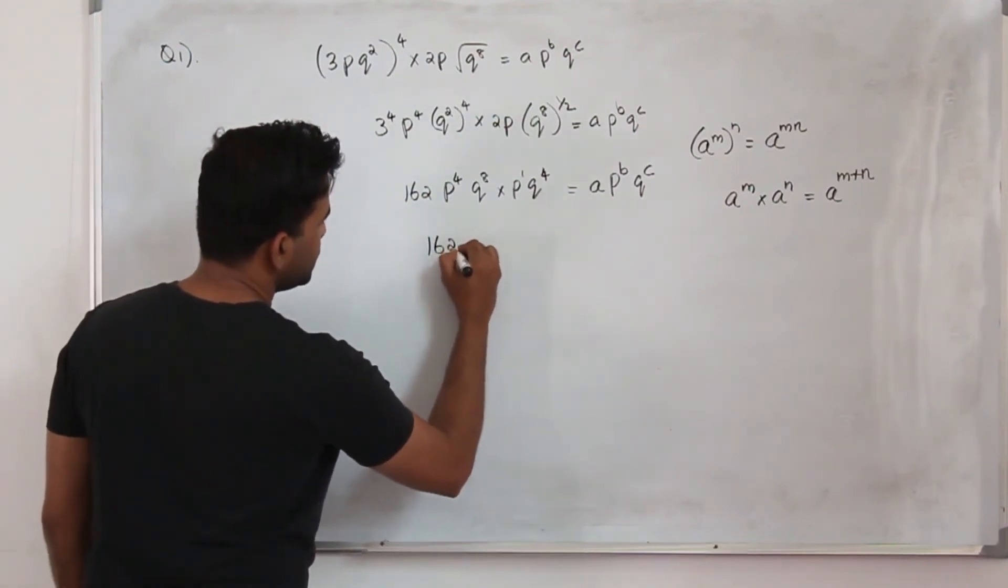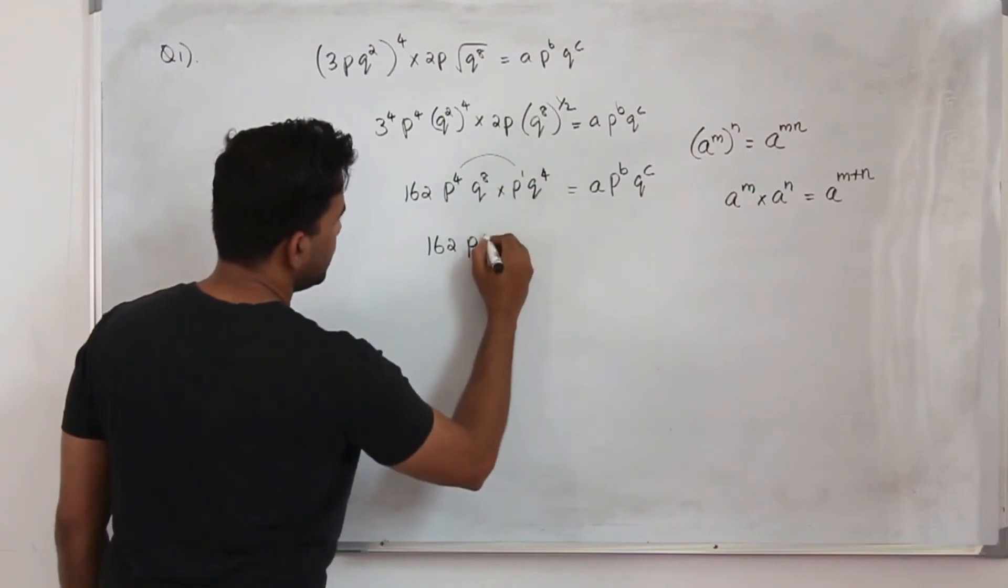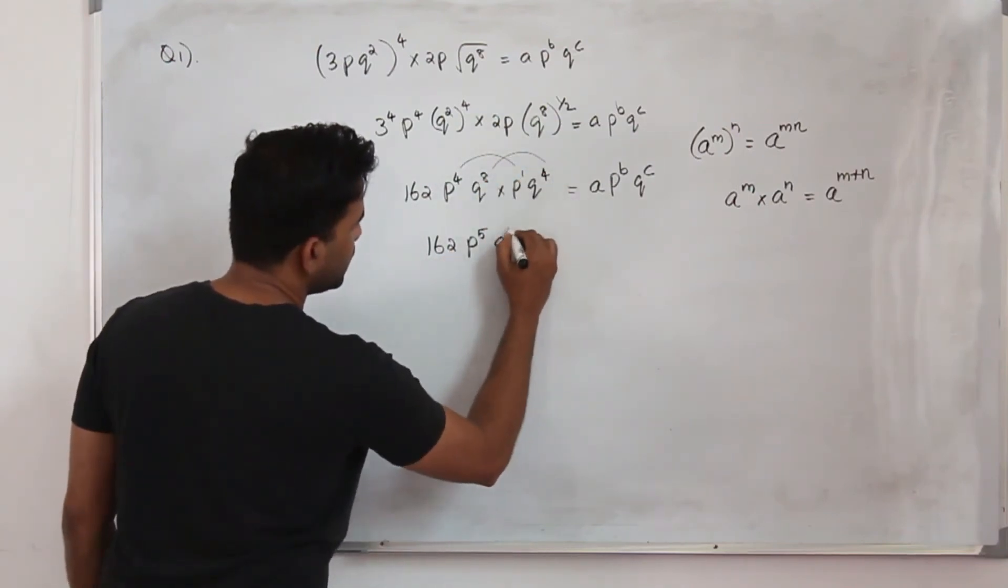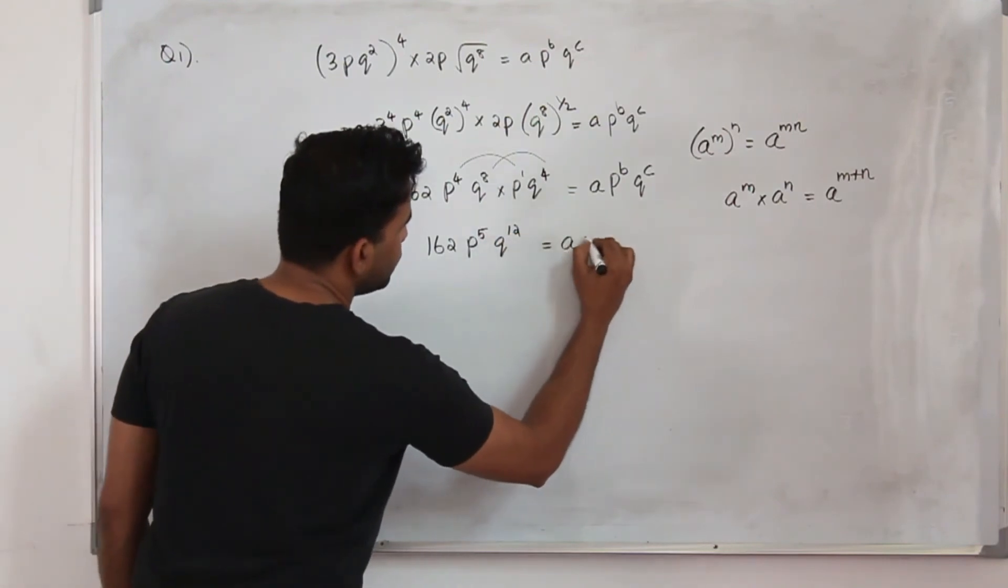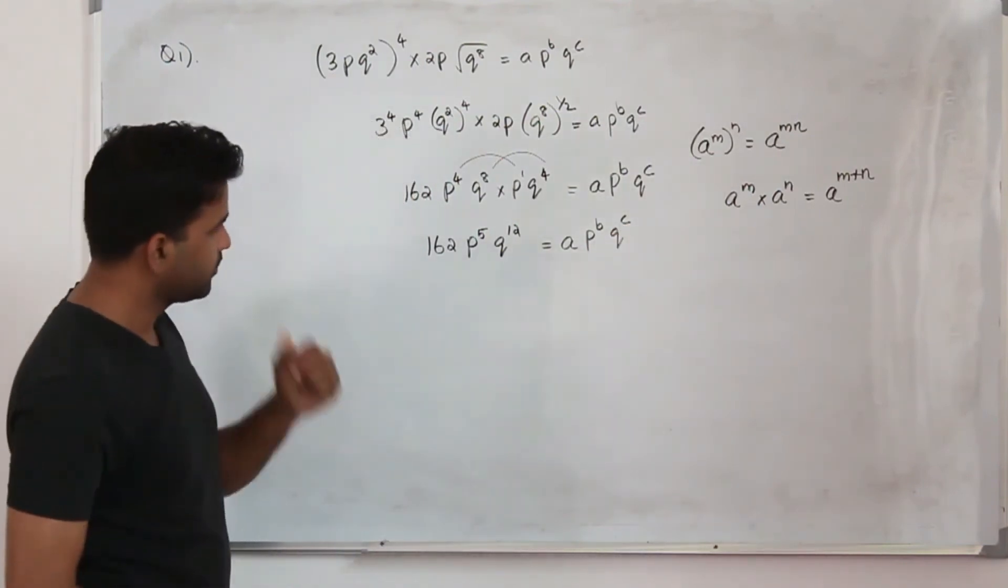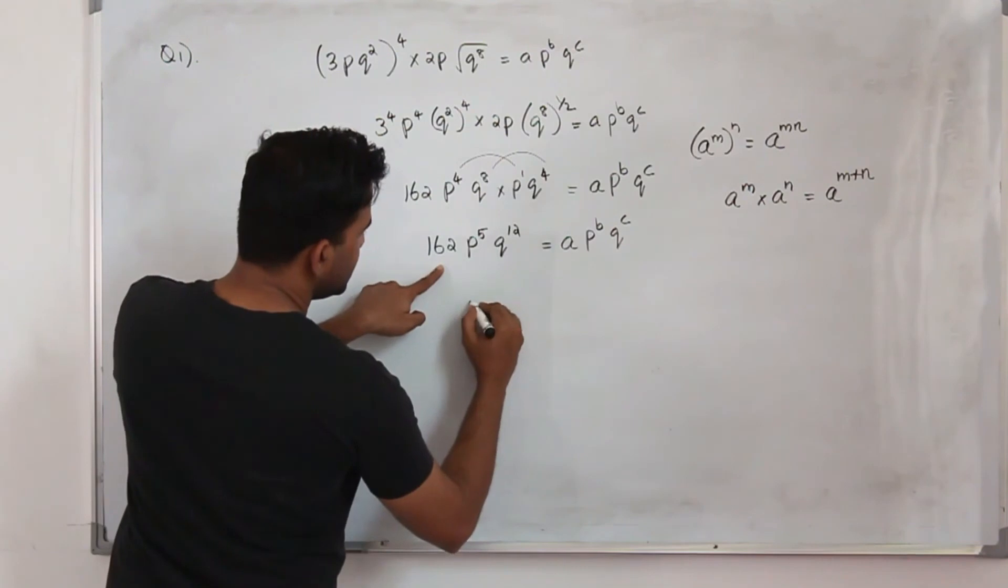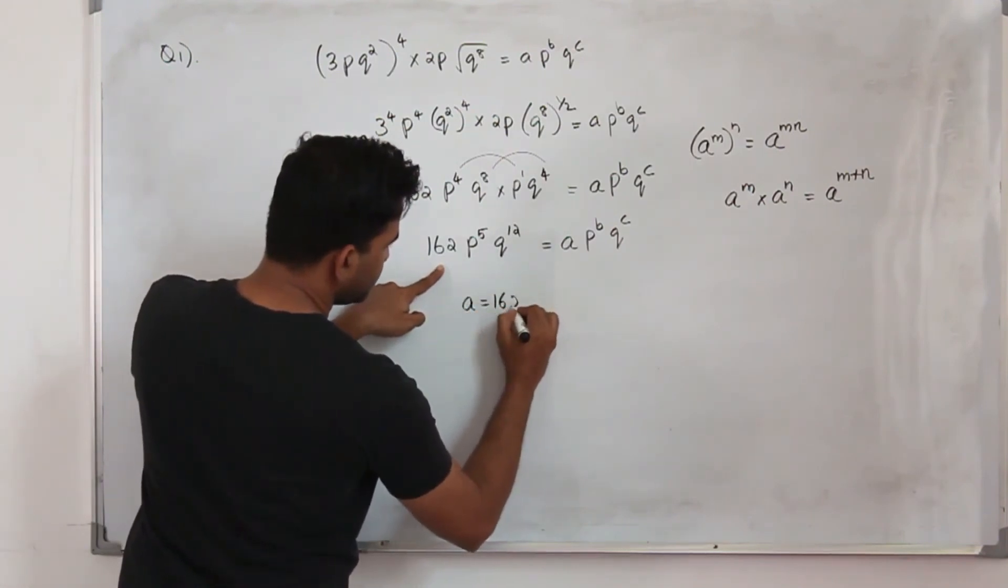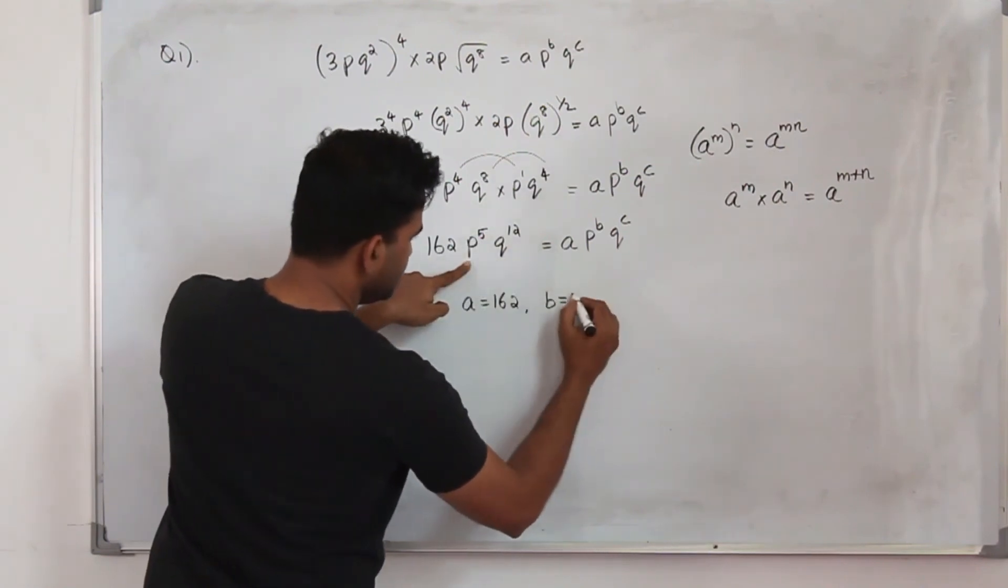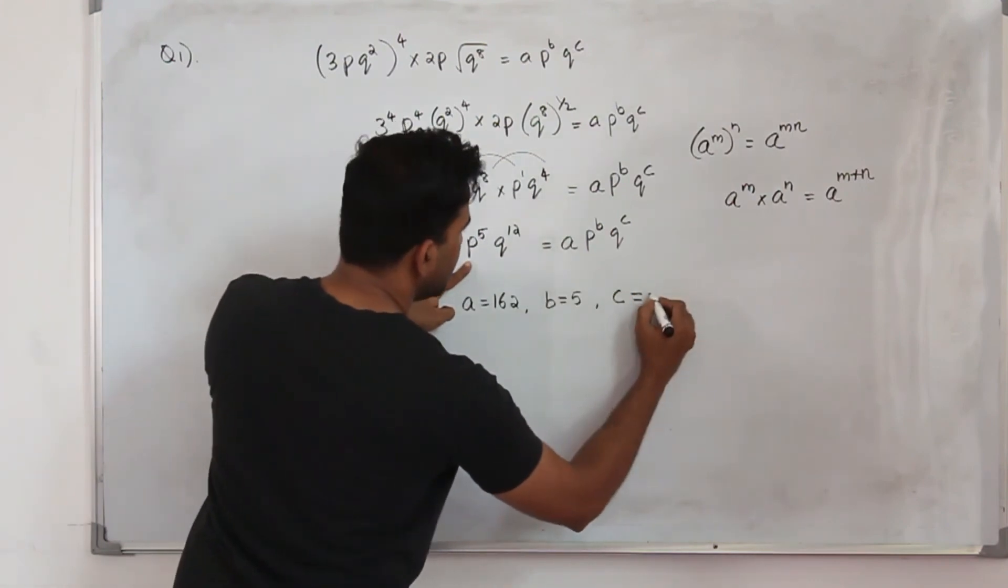So it will be 162 × p^(4+1) which is 5, and q^(8+4) is 12, which equals ap^b q^c. You can just equate them. So our a is this constant 162, b is the exponent of p which is 5, and c is the exponent of q which is 12.